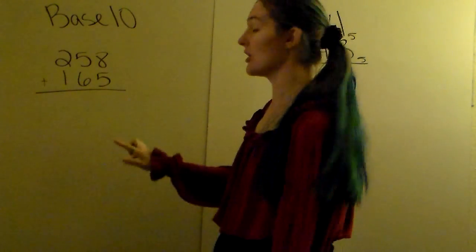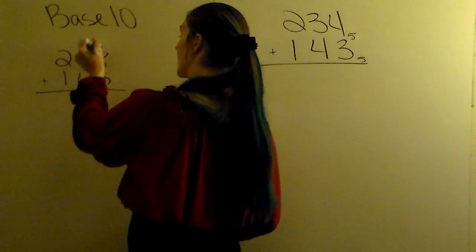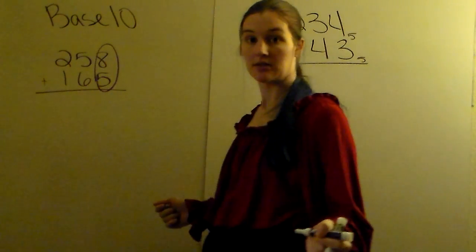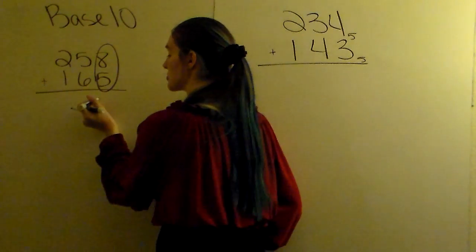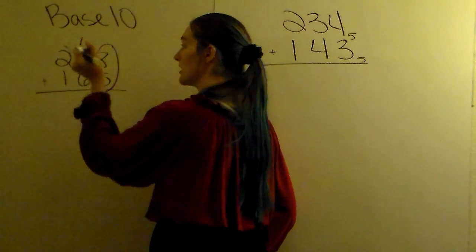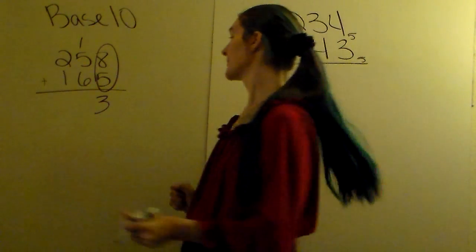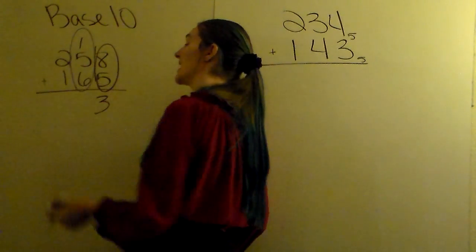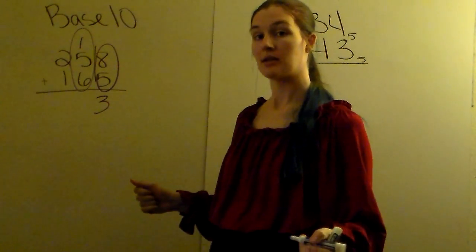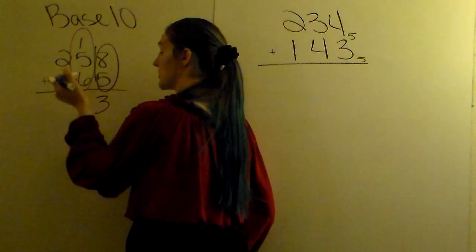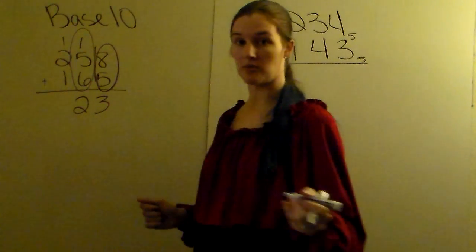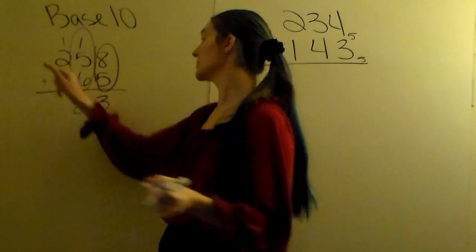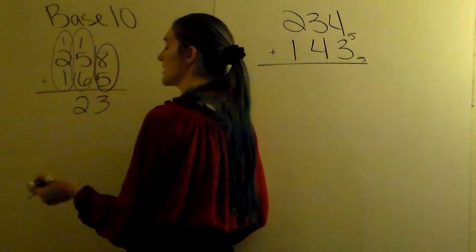Vertically, and we always start from the right. 8 plus 5 is 13. You don't want to write two-digit numbers down here, so you write the 3, carry the 1. You do 6 plus 5 plus 1 gives you 12. Don't want to write a two-digit number, write the 2, carry the 1.